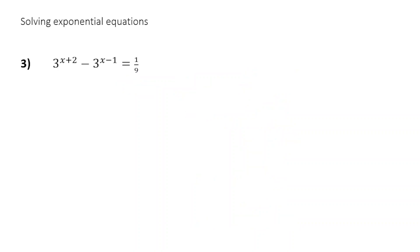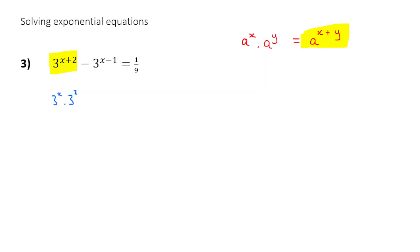Okay, let's keep going to question 3. Now this looks very complicated as well, but let's just apply our rule of indices. Our first rule is: if I've got a to the power of x times by a to the power of y, then what I get is a to the power of x plus y. And it actually works the other way around — if I've got a to the power of x plus y, I could rewrite that as a to the x times by a to the y. So 3 to the x plus 2, I could rewrite as 3 to the x times by 3 to the power of 2. And I could do the same with the other term: 3 to the x times by 3 to the power of negative 1, equal to 1 upon 9.